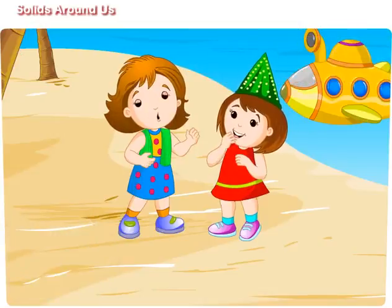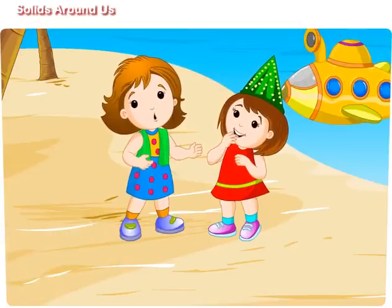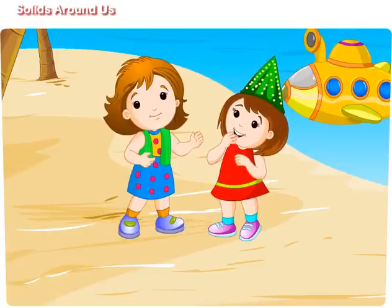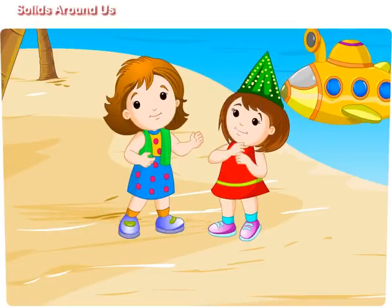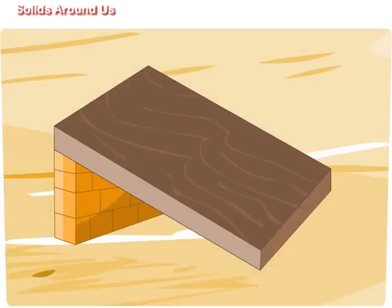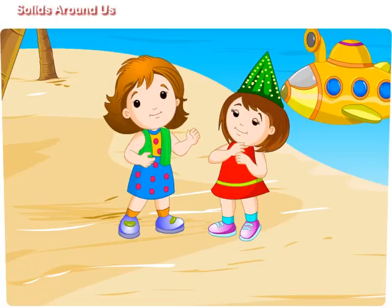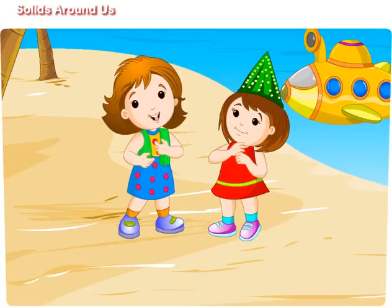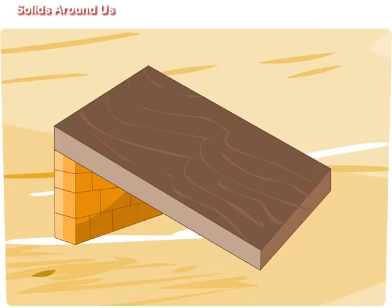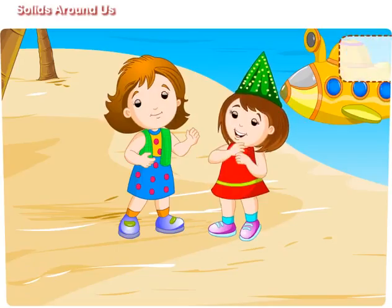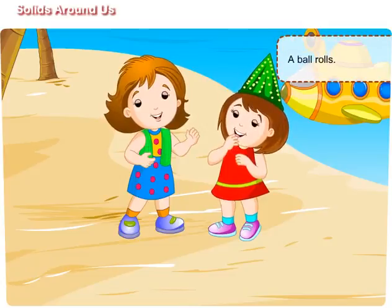Let us play a game of sliding and rolling with these objects. Oh, it would be great fun! Maggie, look — I have made a slide of this wooden plank by keeping some bricks on one side. Let us check whether your ball will roll or slide. Oh, your ball is rolling down.